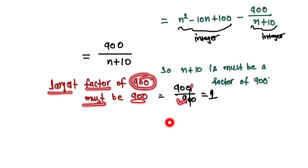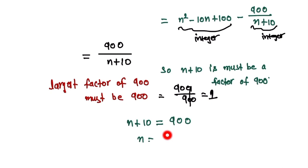We can equate n + 10 equals 900. So the value of n is equal to 900 minus 10, which equals 890. This is our final answer.